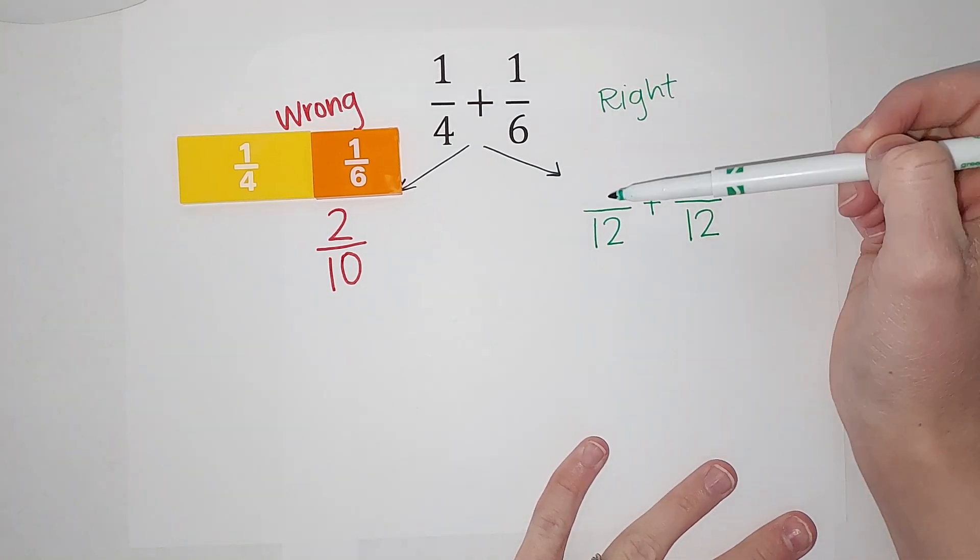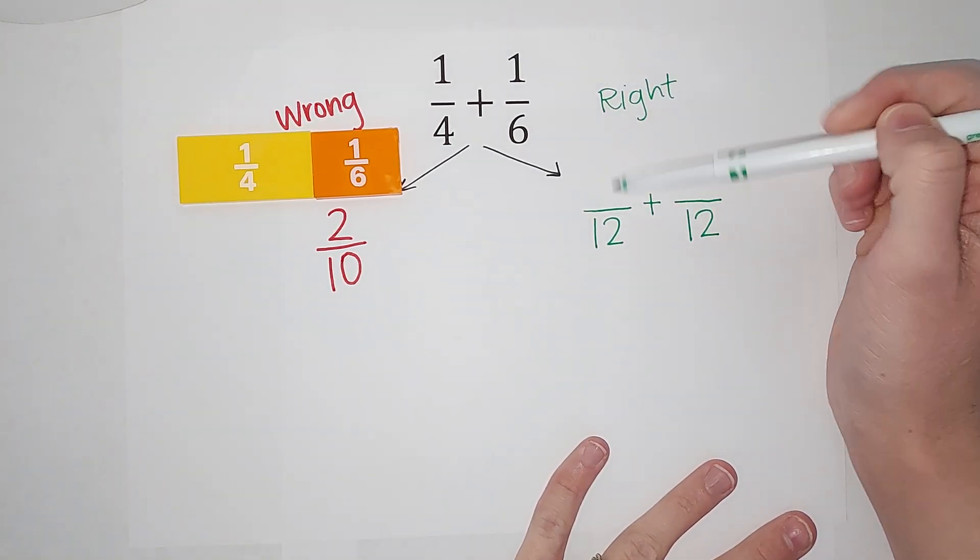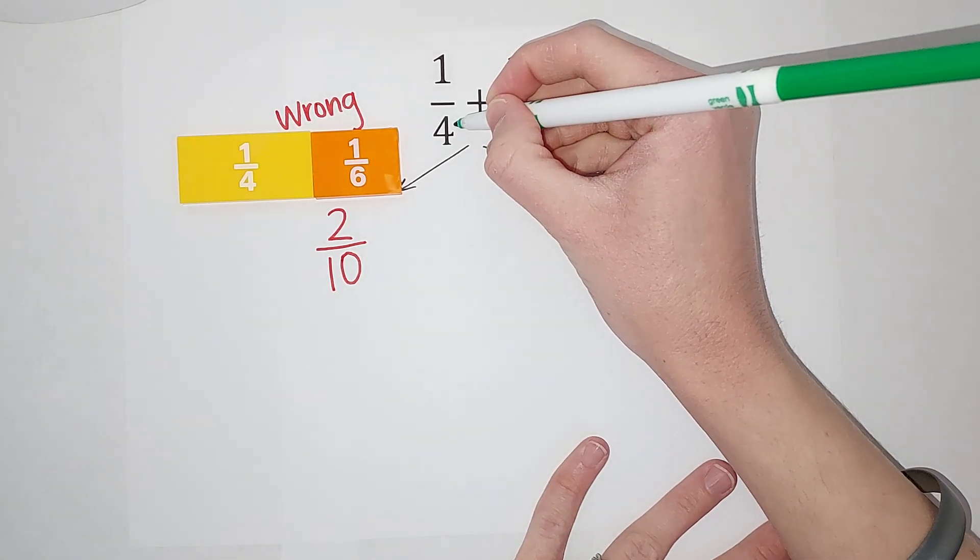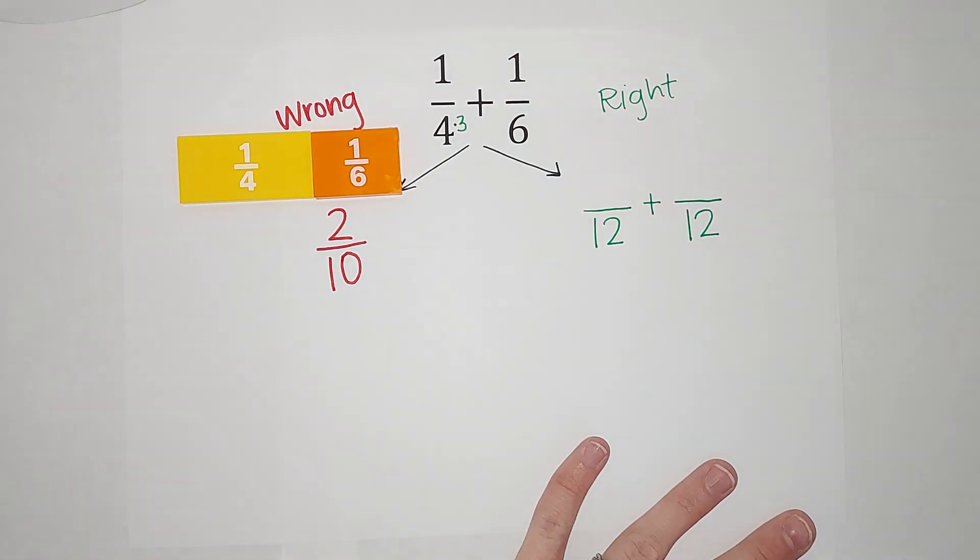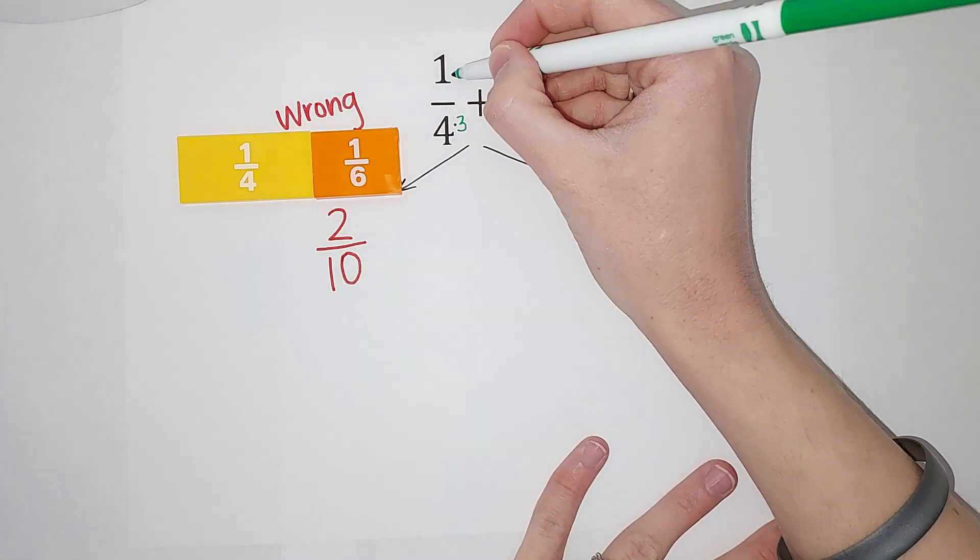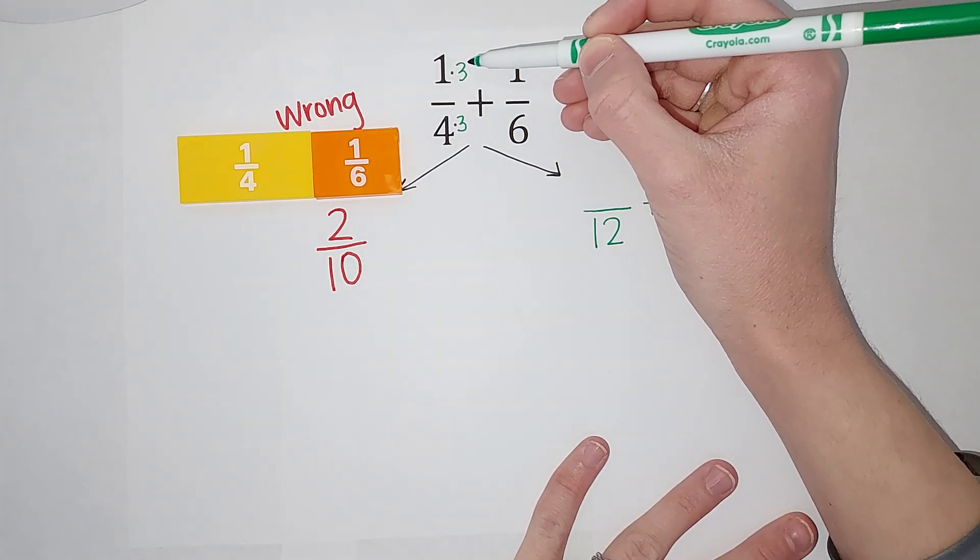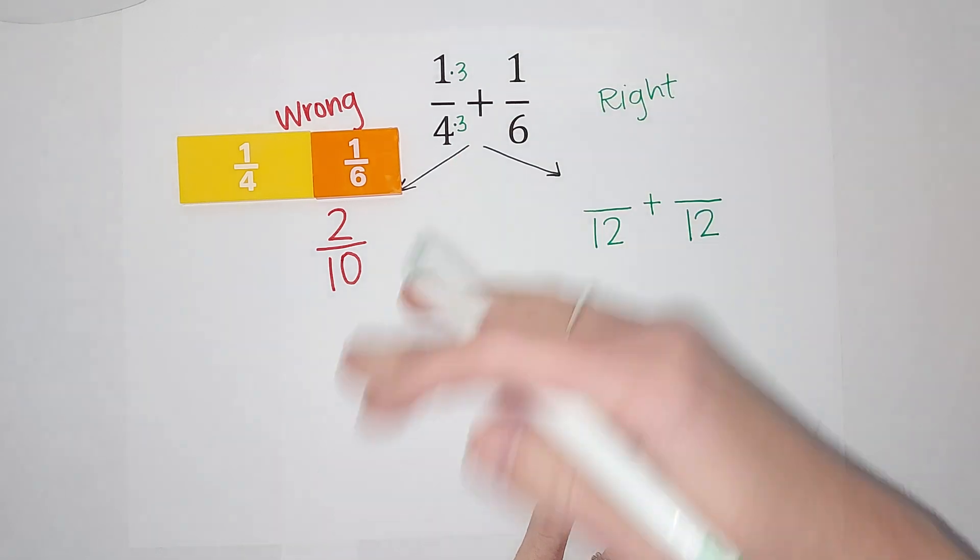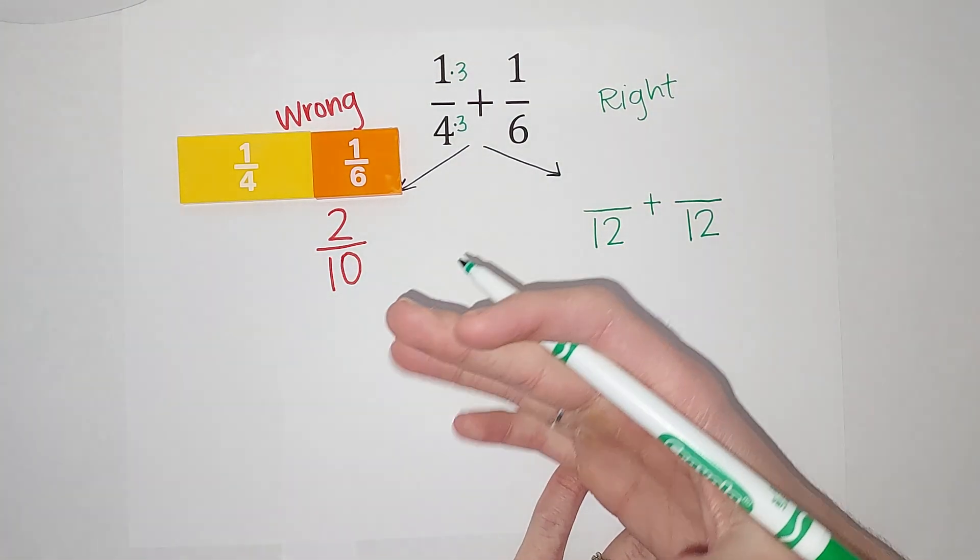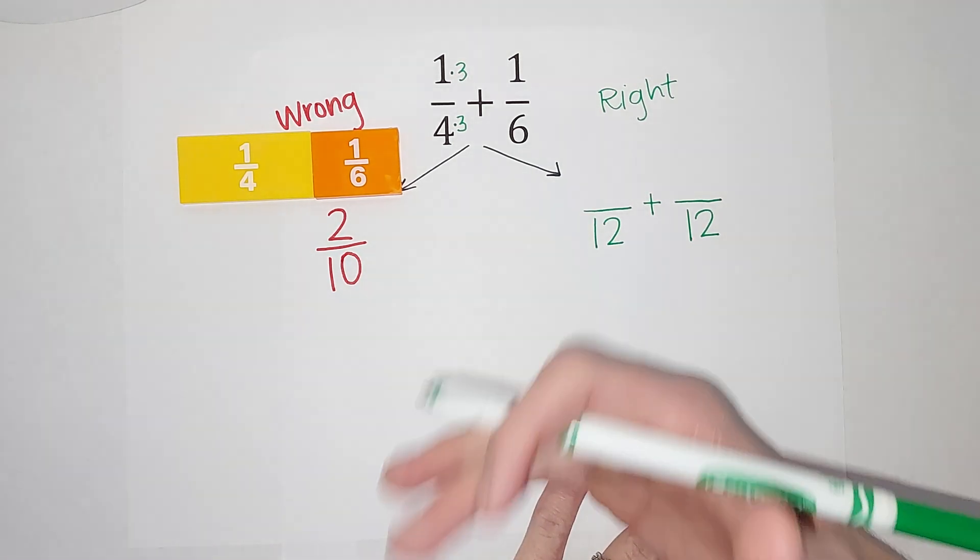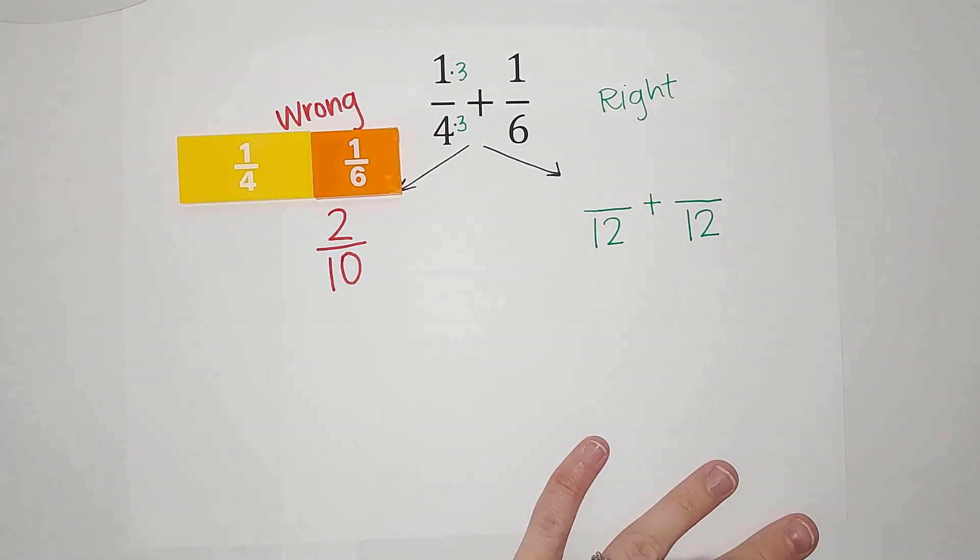But I want 1/4 to be over 12. So what do I do to four to get it to be a 12? Well, I multiply by three. But if I multiply by three on the bottom, I need to multiply by three on the top, because then I'm just multiplying by 3/3, which simplifies down to one. So I'm really just multiplying by a one. It's just a weird looking one. And so I'm changing what the fraction looks like, but not its value. And I'll show you that with the tiles as well.